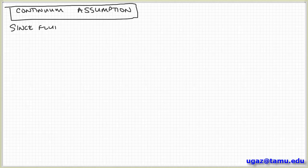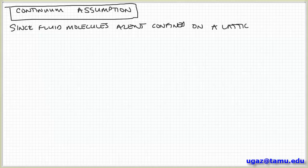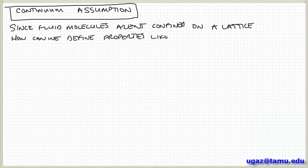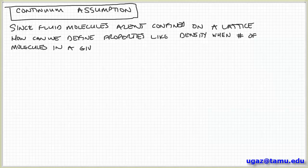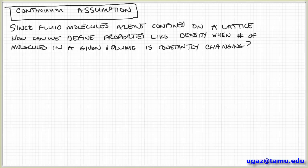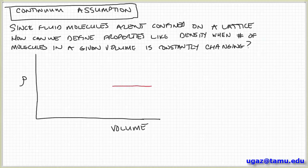The last important concept before getting started is the continuum assumption. The idea is: imagine a box in space where you want to measure some property like density. At the atomic or molecular scale there's always thermal motion, so if your box is small enough, the number of molecules in it may differ between measurements — some will have moved in and some out. This raises the question of how we can say a property like density has a well-defined constant value at a point.